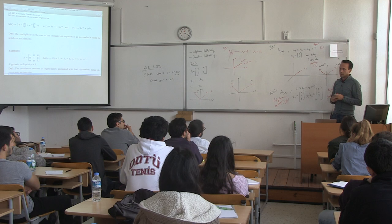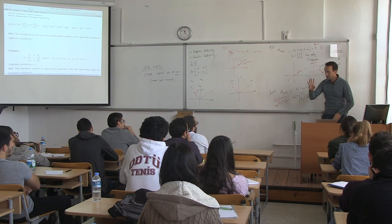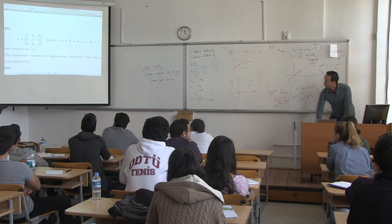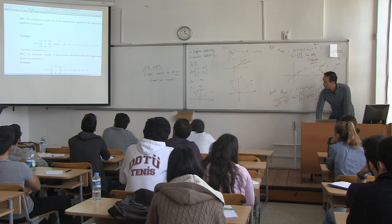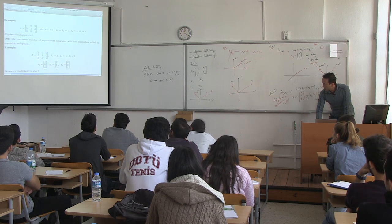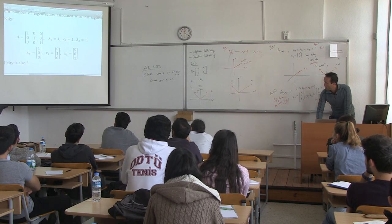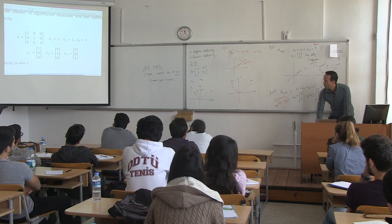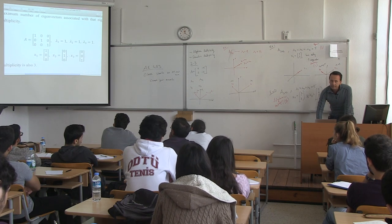A student asked: what if you have four eigenvalues but two are the same as each other and two are different? We have examples for that. Consider the identity matrix — it has three eigenvalues all equal to one, so algebraic multiplicity equals three. But the maximum number of independent eigenvectors associated with eigenvalue one is three as well, so geometric multiplicity is also three.